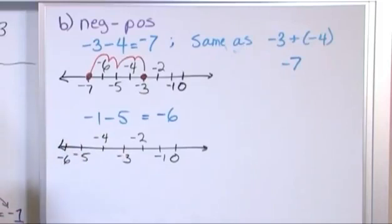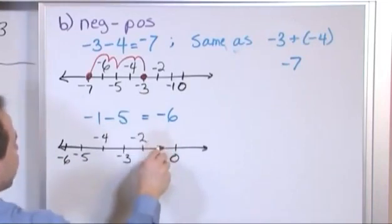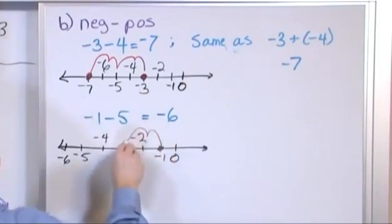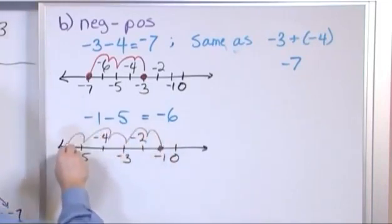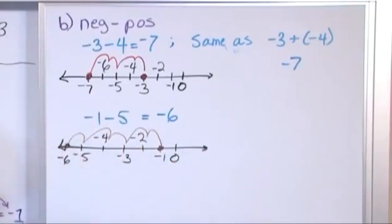Then if you were going to do something like this, you'd be starting at negative 1. This is the starting point and you're going to subtract 5: 1, 2, 3, 4, 5. And you're going to land on negative 6. So just as we said before, we're going to be going more and more negative.